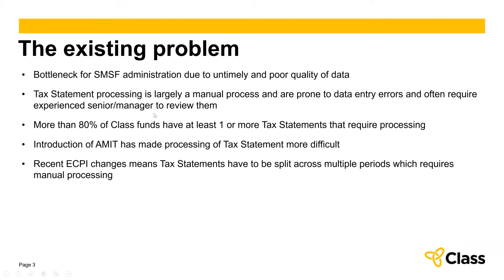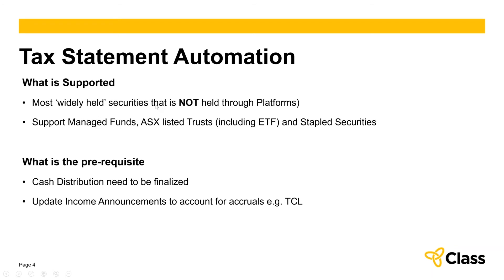What we've done is look at how we can actually automate this tax statement process. We sourced a number of tax statement templates, or ratios, for a large number of widely held securities. Utilizing the income already processed in Class, we're able to apply the tax statement templates and turn that into tax statement components. We've done that for managed funds, exchange-listed trusts such as ETFs, and also stapled securities.